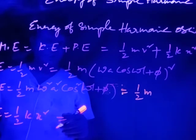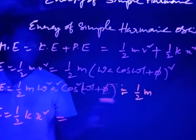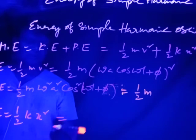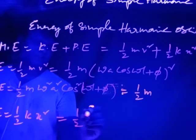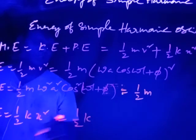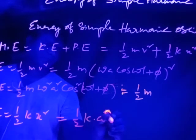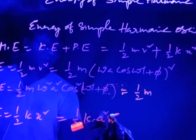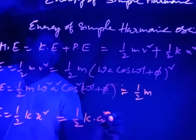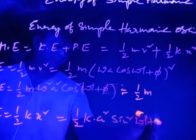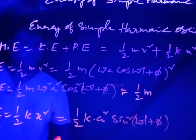We know that ω = √(k/m), so k = mω². Substituting x = A·sin(ωt + π), we get x² = A²sin²(ωt + π).